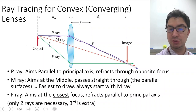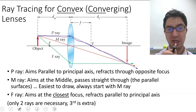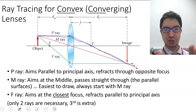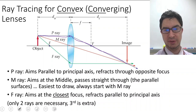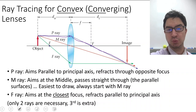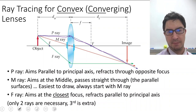When you draw these diagrams you should use a straight edge or a ruler. The P ray aims parallel to the principal axis and refracts through the opposite focus. The M ray aims at the middle of the lens and passes straight through — because when the M ray passes through, the two surfaces at that point are parallel, so there is no deflection of the ray.